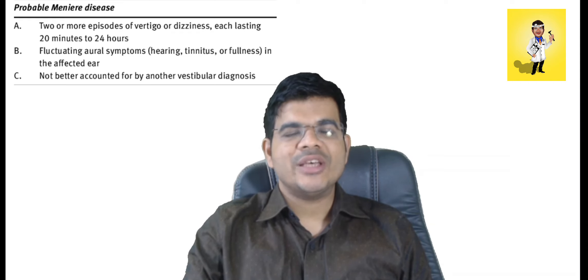And along with that there should be episodes of vertigo or dizziness which last for more than 20 minutes up to 24 hours. What are the other features of Meniere's disease?